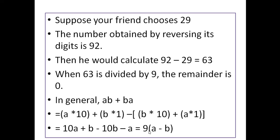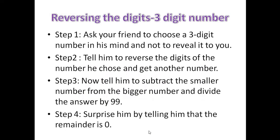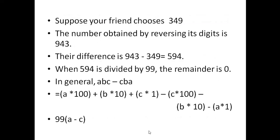Next, Game 2: reversing the digits of three-digit numbers. Ask your friend to choose a three-digit number and reverse its digits to get another number. Tell him to subtract the smaller from the bigger and divide the answer by 99. Surprise him by telling him the remainder is 0.